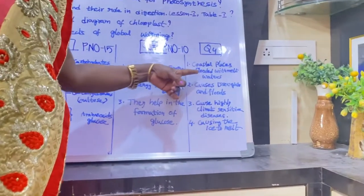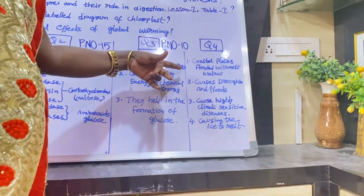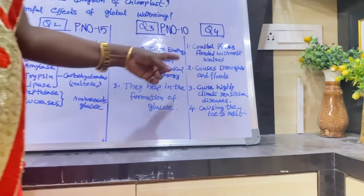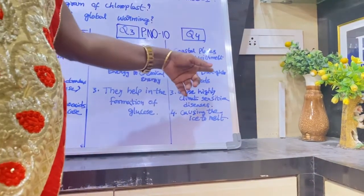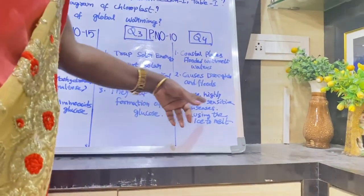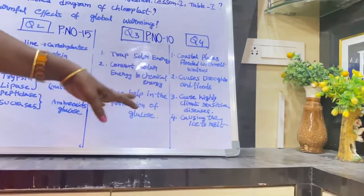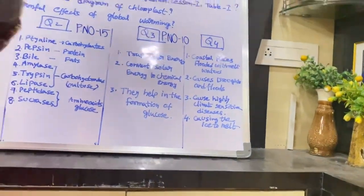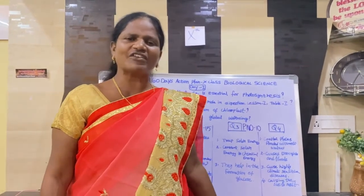The three main points of global warming: first, coastal places are flooded with melt waters — the ice in northern areas melts and joins the sea, making the sea bigger and flooding coastal areas. Second, global warming causes droughts and floods — high temperatures extend summer causing drought, which then leads to floods. Third, it causes highly climate-sensitive diseases like skin cancer. Additionally, global warming melts ice, increasing flux and causing further harmful effects on the earth.